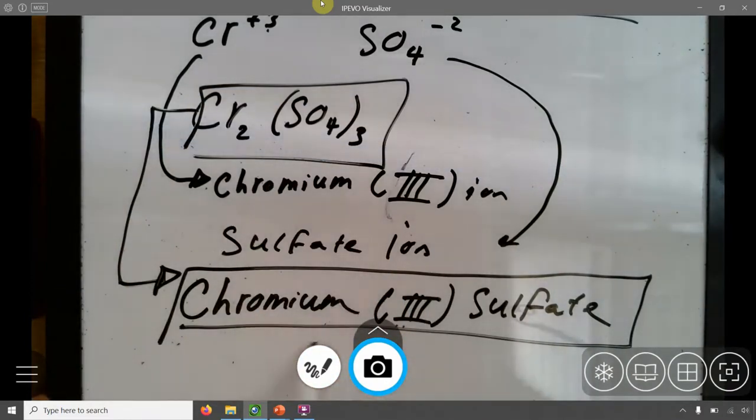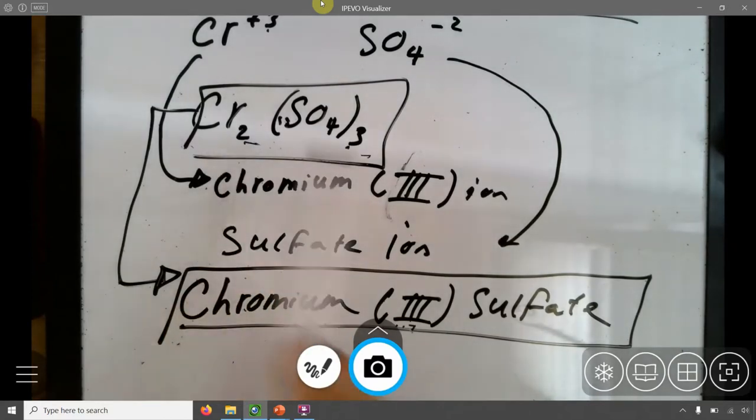And then the person who sees this, if they don't see this, they'll be able to write that, because they'll know chromium has to have positive three rather than positive two or something like that. Because if chromium had positive two, it would have different subscripts here. So that's that.